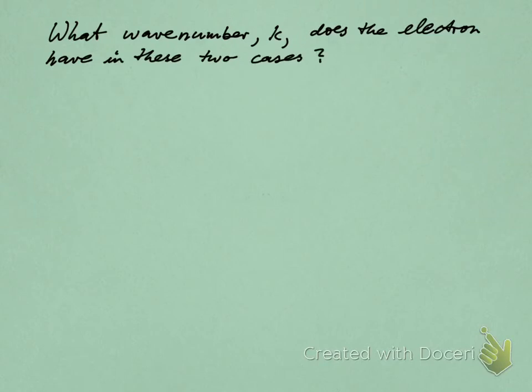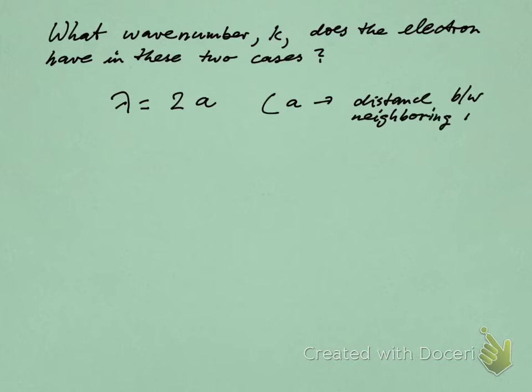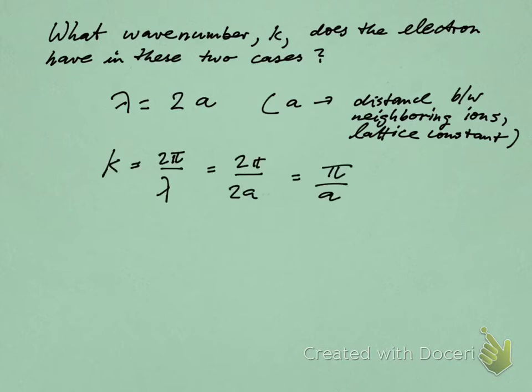So what wave number k does the electron have in these two cases, these two instances? Well, basically, if you look at the picture, the wavelength is exactly two times the lattice spacing: lambda equals 2a, where a is the lattice spacing or lattice constant. So what k value does that correspond to? A quick calculation reveals that the wave number is just pi over a. Hmm, interesting, right? Pi over a is appearing here.